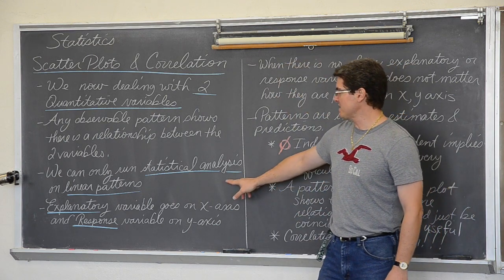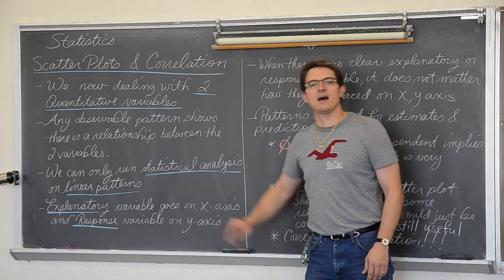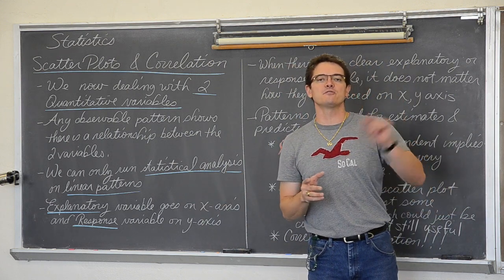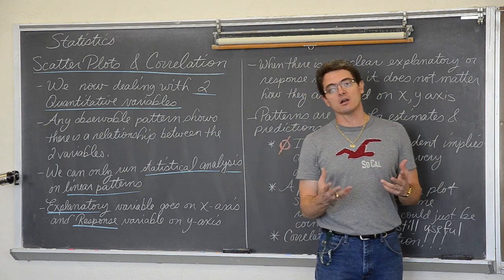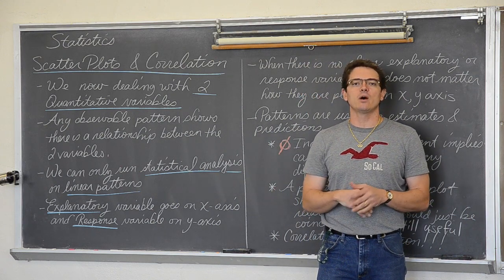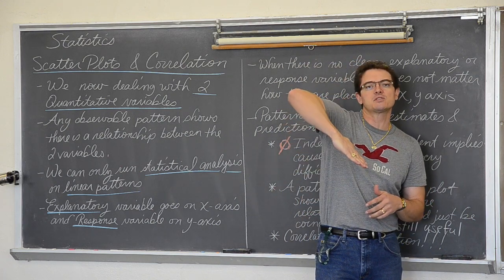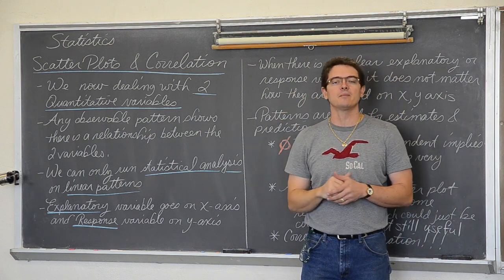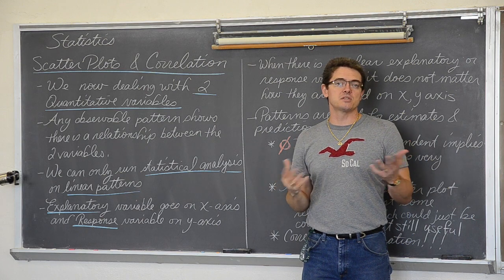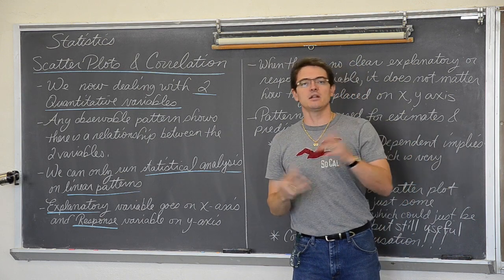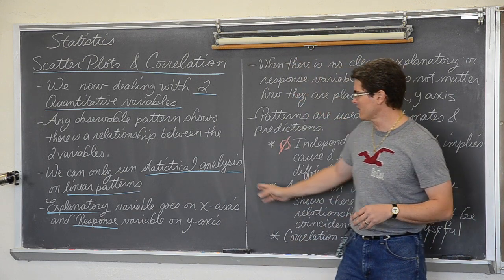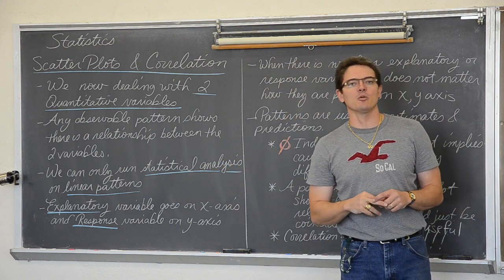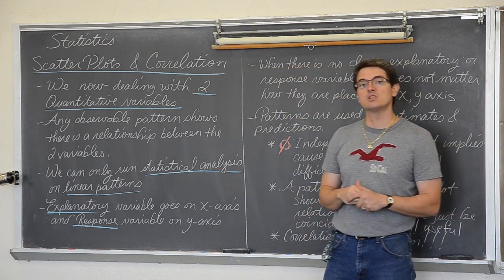We can only run statistical analysis on linear patterns. So when we draw a scatter plot with our calculator by hand, if it does not follow a linear pattern, we can talk about what we see, and whether it is positive association or negative association, or maybe the points are scattered all over the place, or a horizontal line, where there is no association. But if it is linear, and this is only intro to statistics, so we are limited to only being able to run math calculations on a linear pattern.